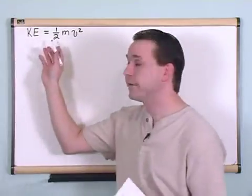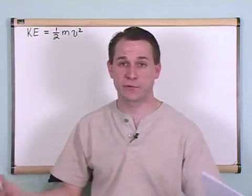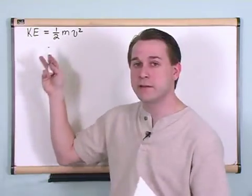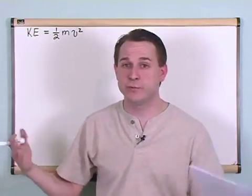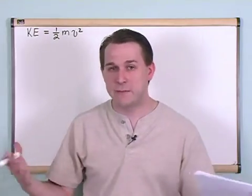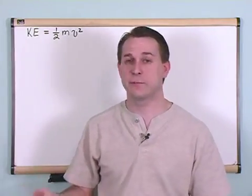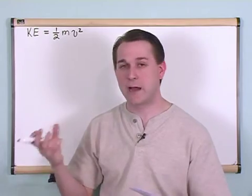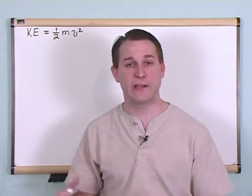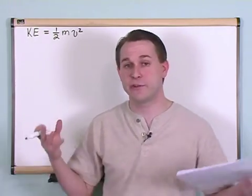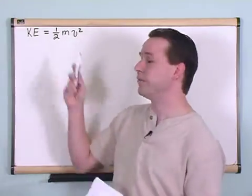Why does it have a one half in there? I don't know. It's the way the universe works. Why is it m times v squared, not v cubed? Why is it m instead of m squared? I don't know the answer to these questions, but you can look at objects in the world and calculate the energy and you'll find that it's a very accurate representation of what the energy is.